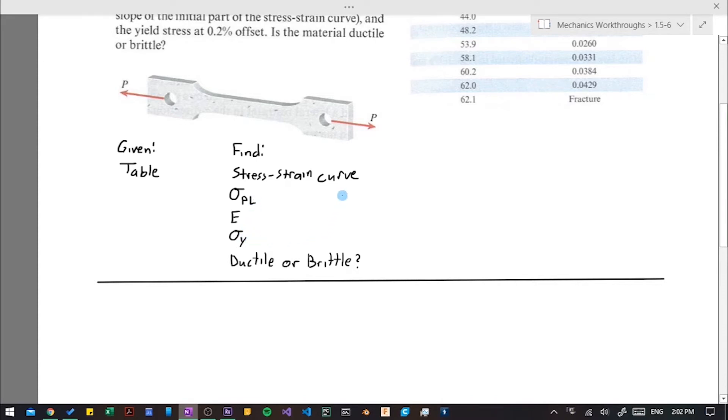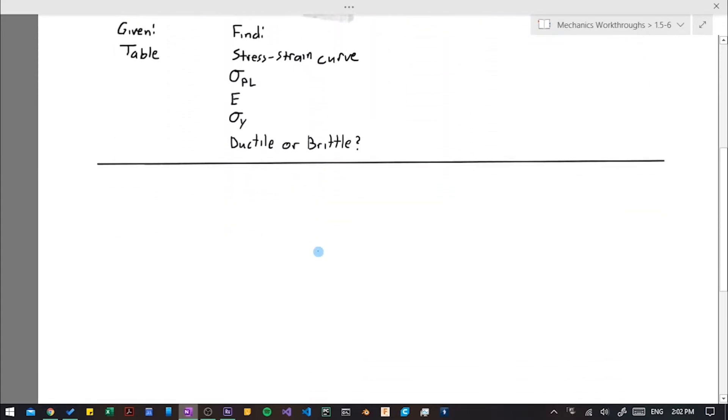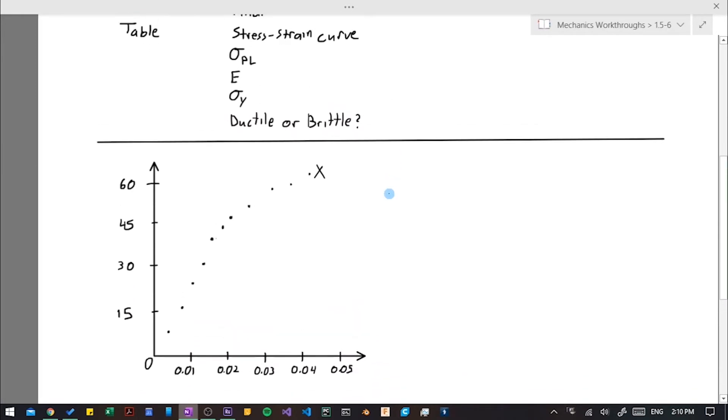And now we're going to create our plot using the table that was given to us. And so for our scale, we're going to start at 0 for each of them. But for stress, we're going to go up to about 60 MPa. And for our strain, up to 0.05. I also want to point out that we always use strain for our x values and stress for our y values. And that's just the convention of how we draw this curve.